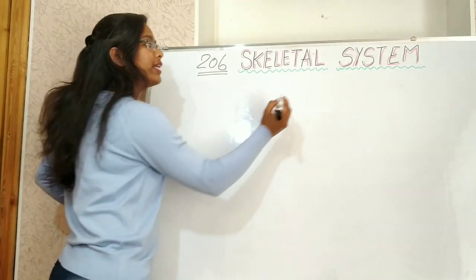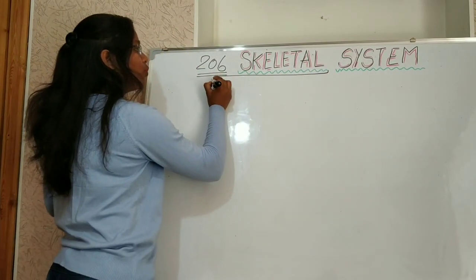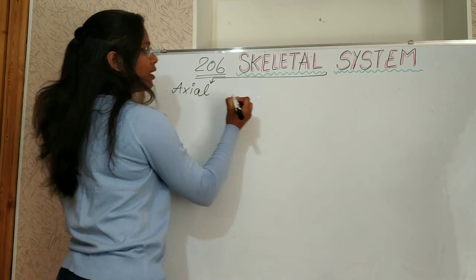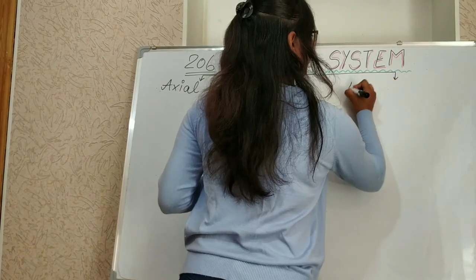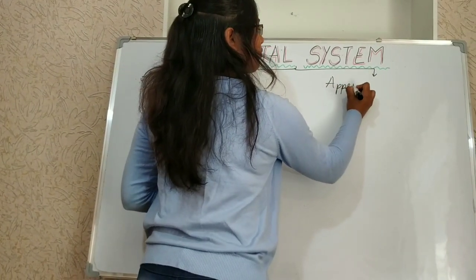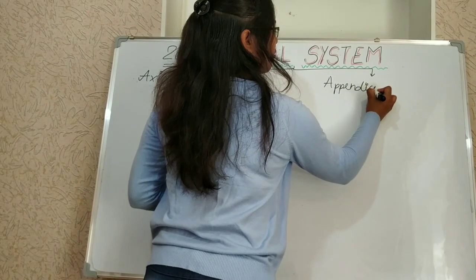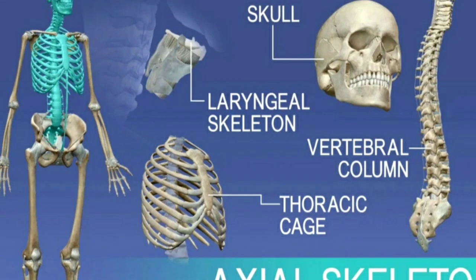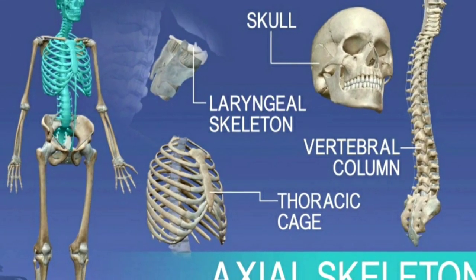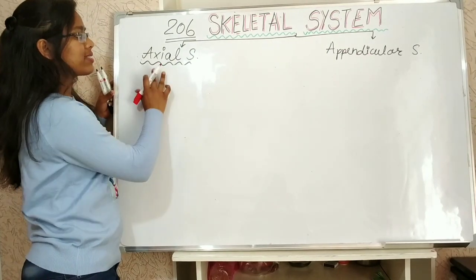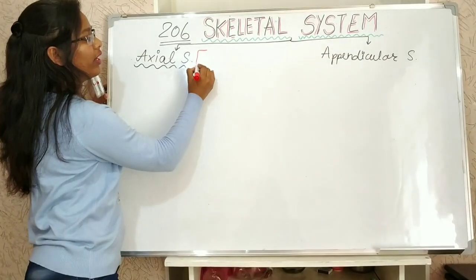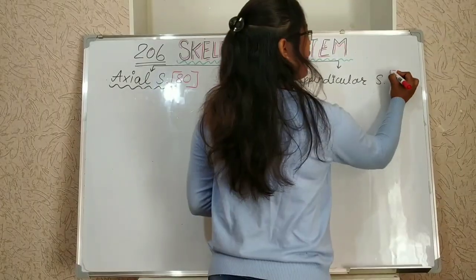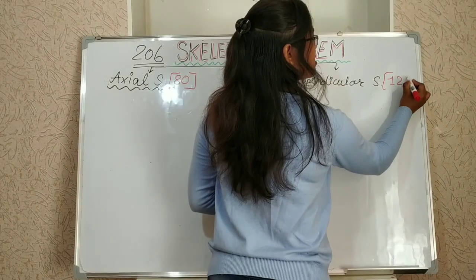Here skeletal system I will divide into two: axial skeletal system and appendicular skeletal system. Axial skeletal system we have 80 bones total and in appendicular skeletal system we have 126 bones.